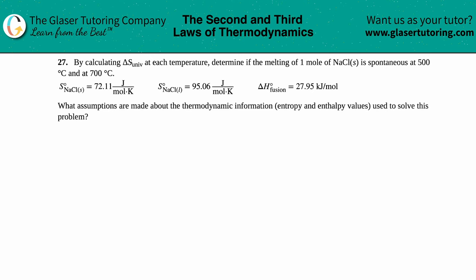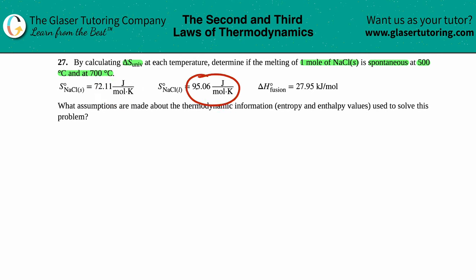Number 27: by calculating delta S for the universe at each temperature, determine if the melting of one mole of NaCl solid is spontaneous at 500°C and 700°C. They give us the entropy for NaCl solid as 72.11 J/mol·K, for NaCl liquid as 95.06 J/mol·K, and delta H fusion as 27.95 kJ/mol.